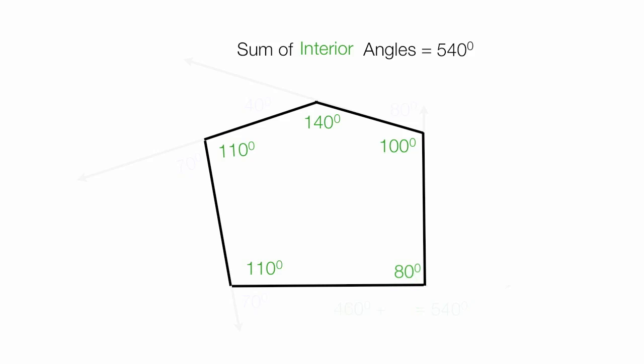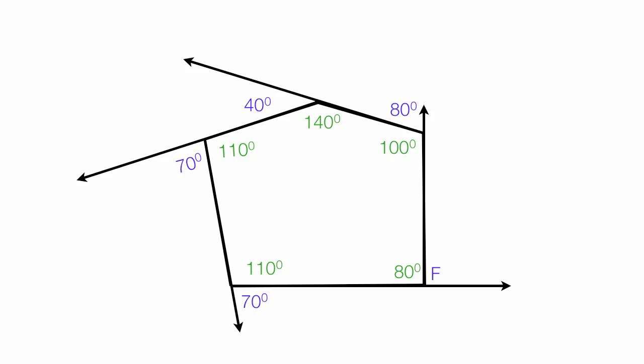Now we have all of the interior angles defined and calculated. Now if I fade out everything else, we can calculate the last one, which is F, because that's a supplemental angle as well. Those two add up to 180 degrees. That means F has to be 100 degrees.